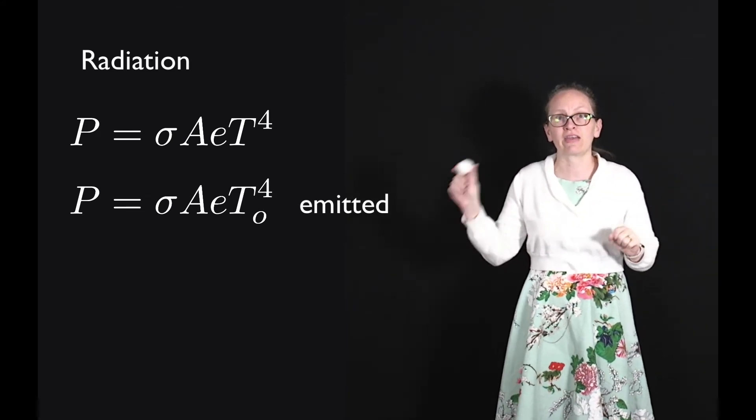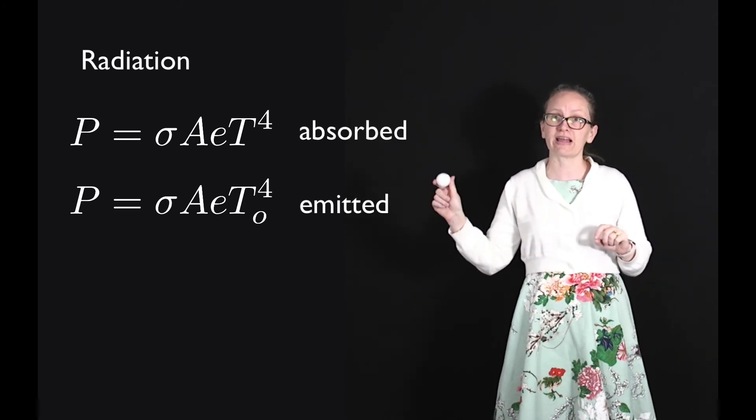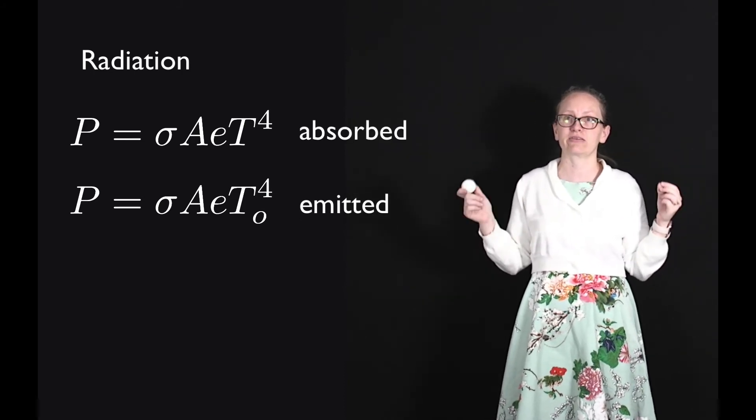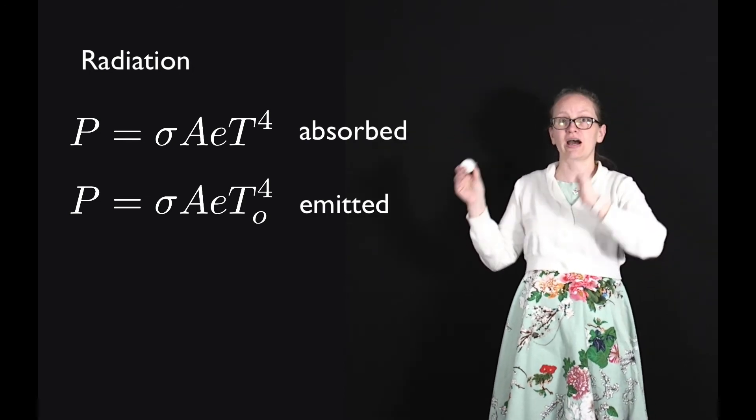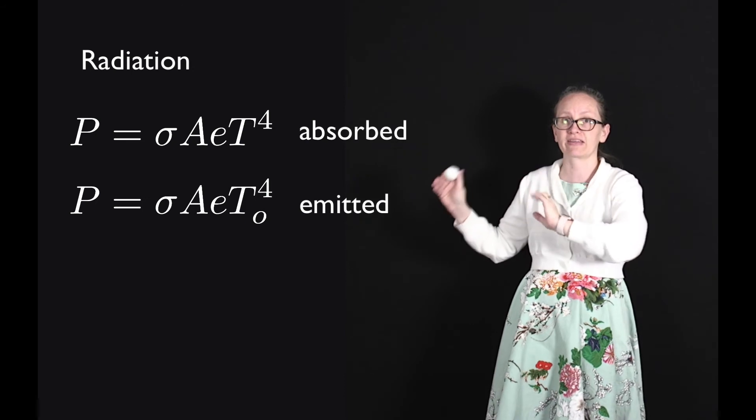The amount of heat which it absorbs from the surroundings is given by P equals sigma A e T to the 4, where the temperature in this case is the temperature of the surroundings.